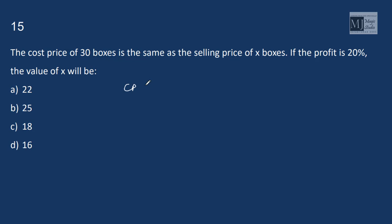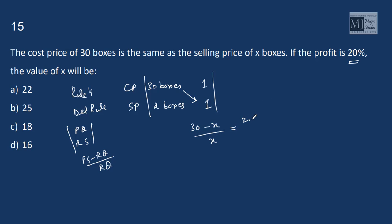The cost price of 30 boxes is same as selling price of X boxes. Let it be rupees 1. Now we know the debt rule. Profit is given by PS minus RQ by RQ. So here profit would be 30 into 1 minus X into 1 by X is 20%. 150 minus 5X is X. 6X is 150. X equals 150 by 6, that is 25. So the value of X is 25.